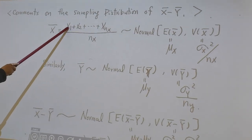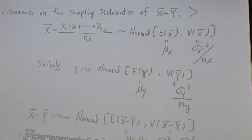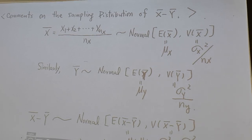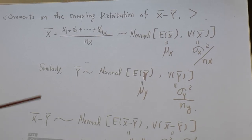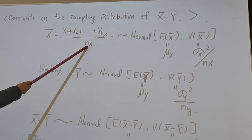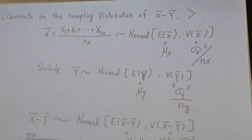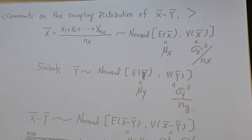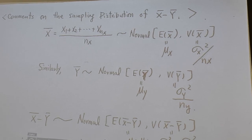And we assume x1 up to xnx is a simple random sample from normal population. And we also know normality is closed under linear combination, right? That means two normal random variables, you add or you subtract, still what? Normal.